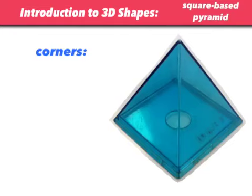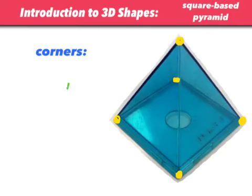Corners. Pause here, count up the corners on a square-based pyramid and come back when you've counted them. Let's have a look at the corners. We've got one, two, three, and there'll be one inside there at the back — that's four. And then obviously we've got this really pointy corner right at the top. So on a square-based pyramid, there are five corners.